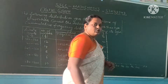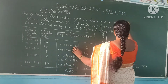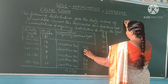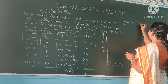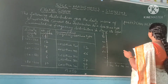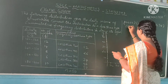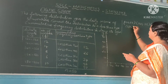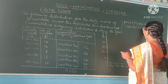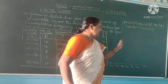So the points to draw on the graph are: 120 comma 12, 140 comma 26, 160 comma 34, 180 comma 40, and 200 comma 50. These are the points to be plotted in the graph.